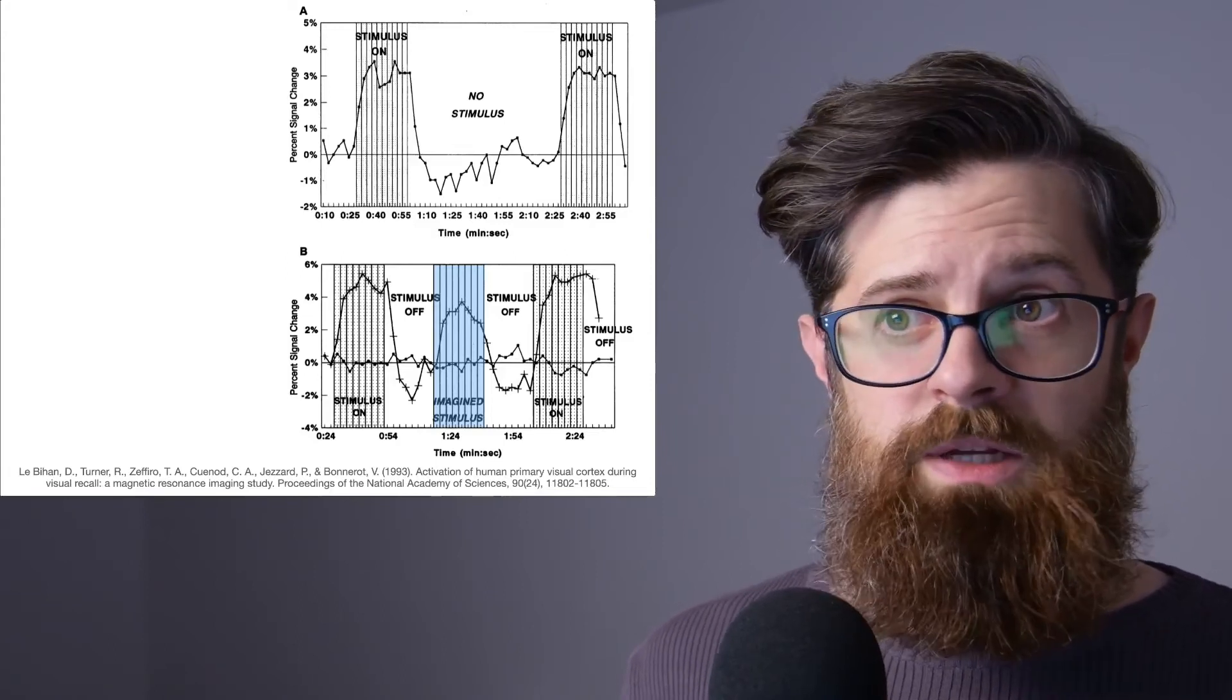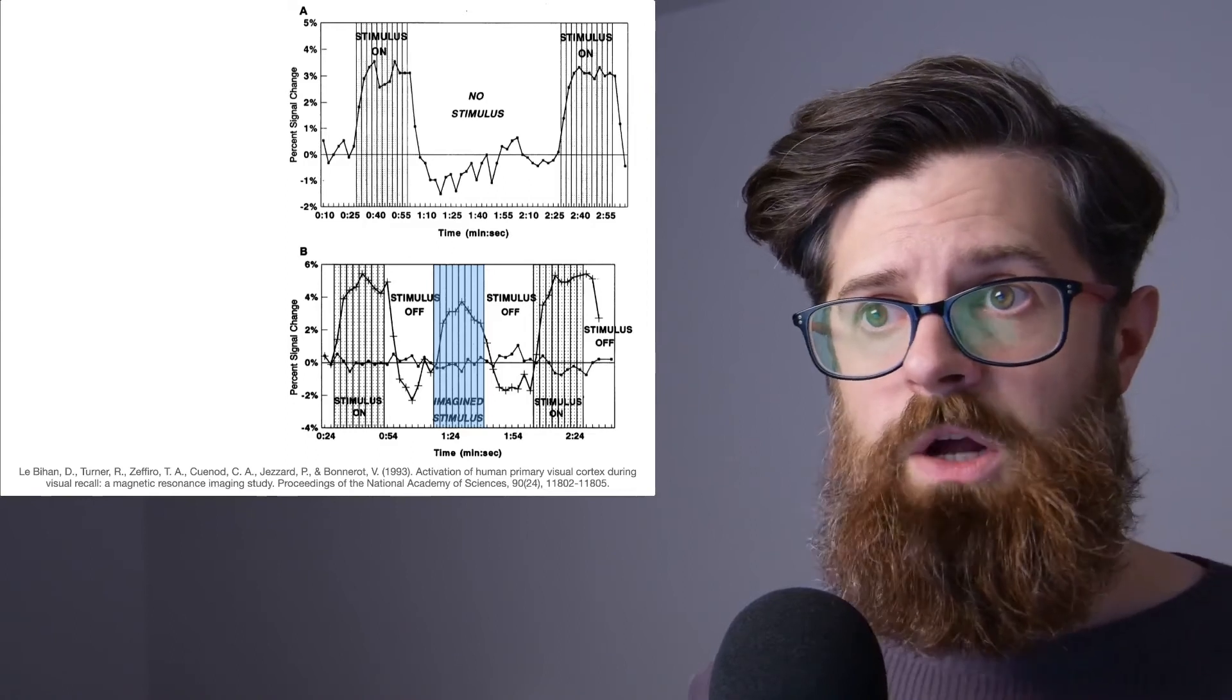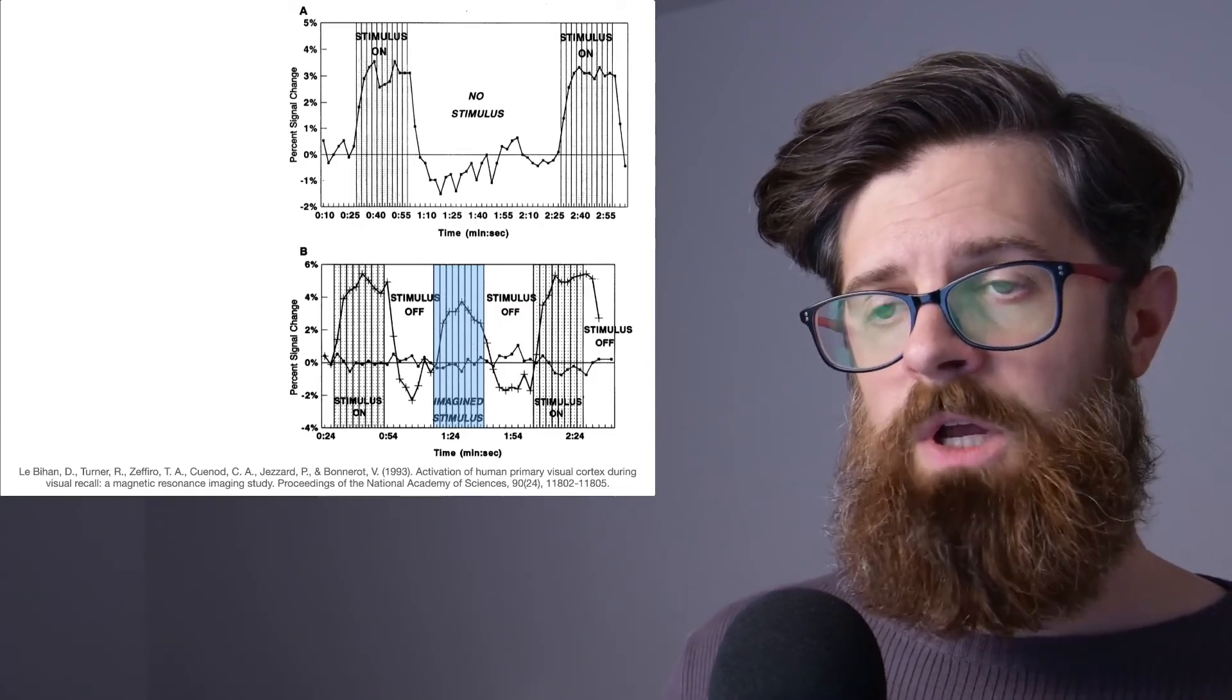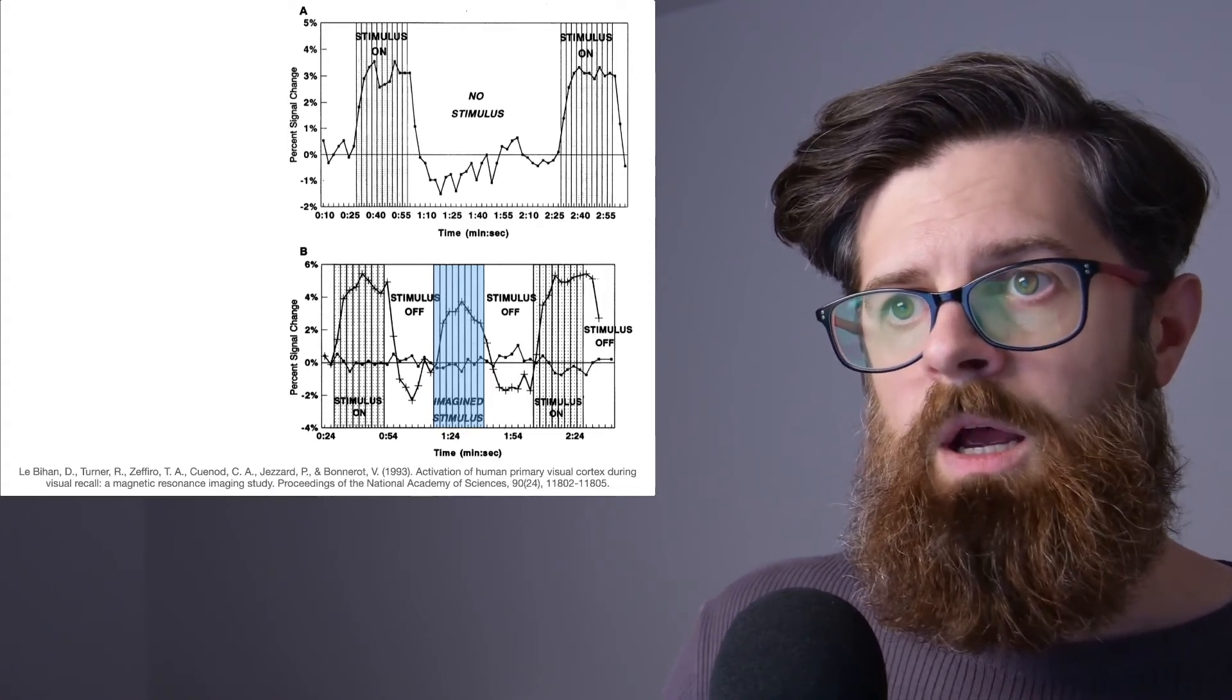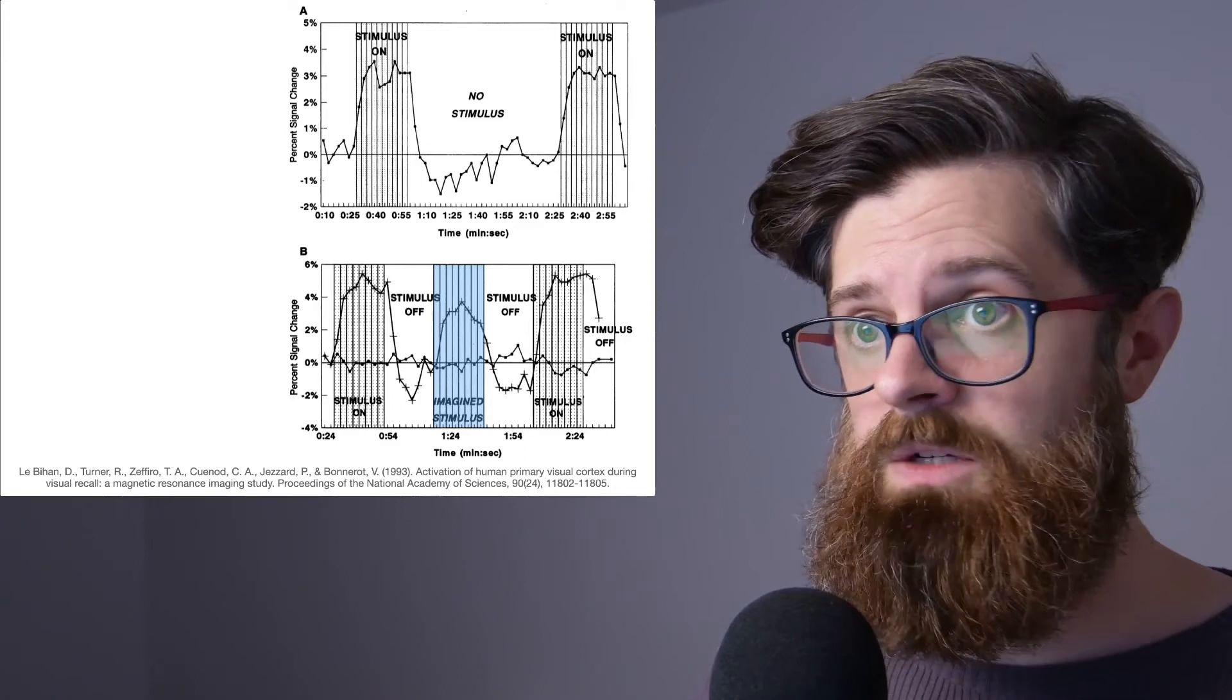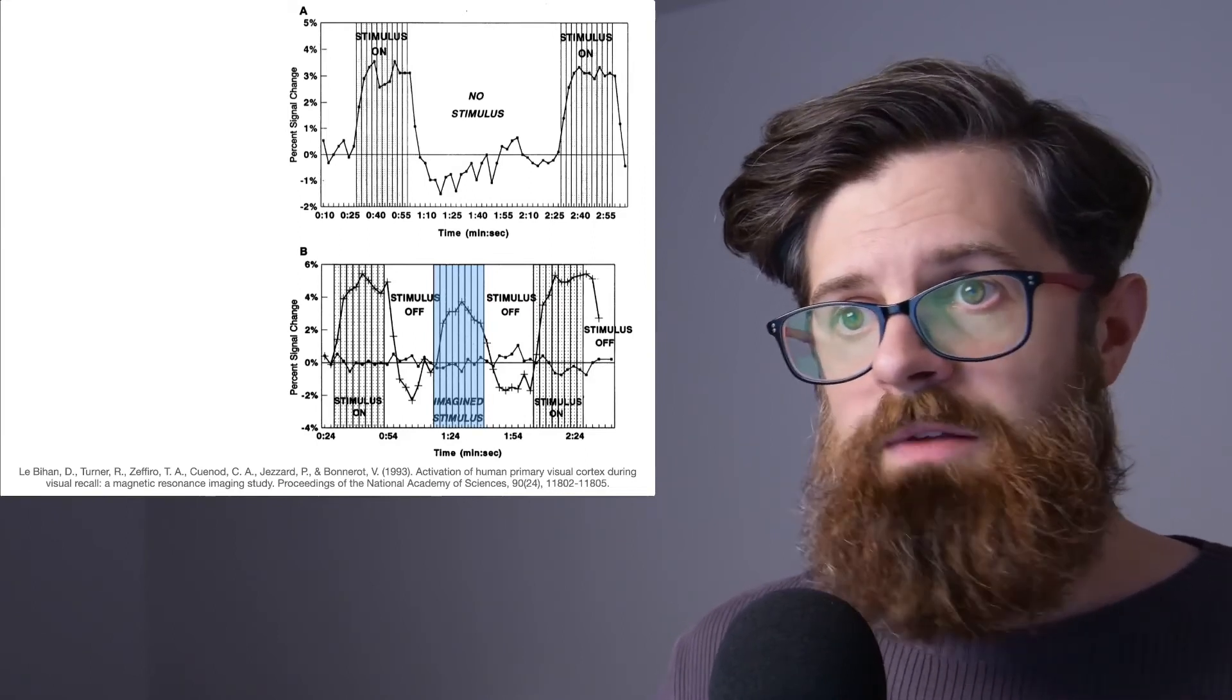Well, very interestingly, whether you predicted or not, the activity in the primary visual cortex goes up. It's kind of interesting - it doesn't quite go up to the same level. As a non-fMRI person I don't really know if that means anything, but it's very interesting that if you imagine some stimulus that you just saw but it's not there at all, you have activity in the primary visual cortex.